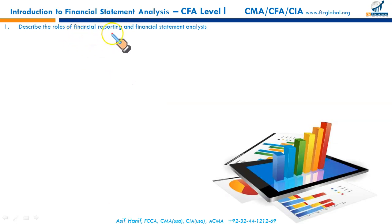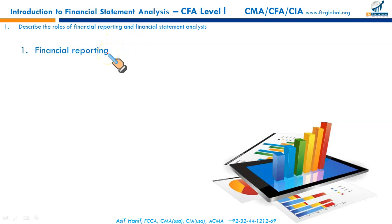The first LOS says: describe the role of financial reporting and financial statement analysis. You need to know the difference between these two. Financial reporting means how companies show their financial performance to many users of financial statements — those who have bought shares in the company, those who have provided credit to the company, those who have other financial transactions with the firm.